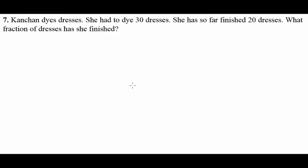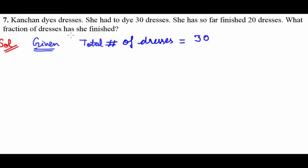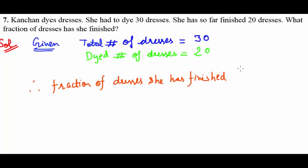We are given total number of dresses as 30. Number of dyed dresses is 20 — she dyed 20 dresses. Therefore fraction of dresses she has finished would be equal to dyed dresses over total dresses.